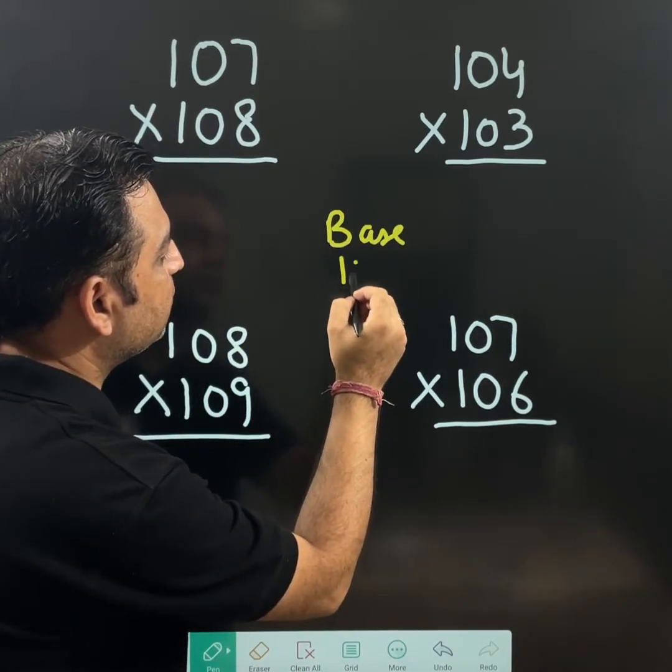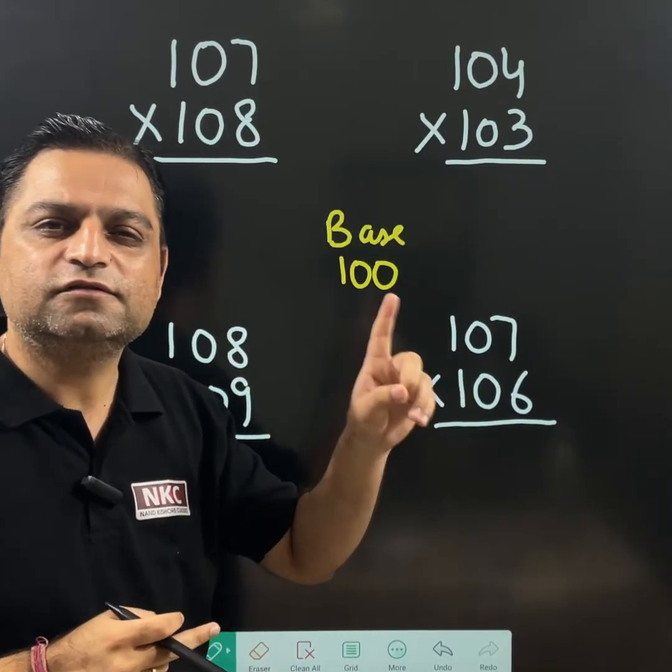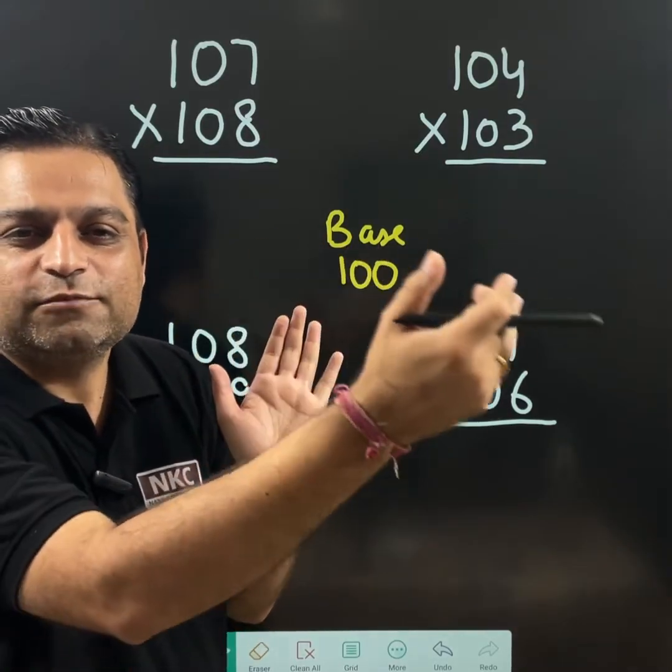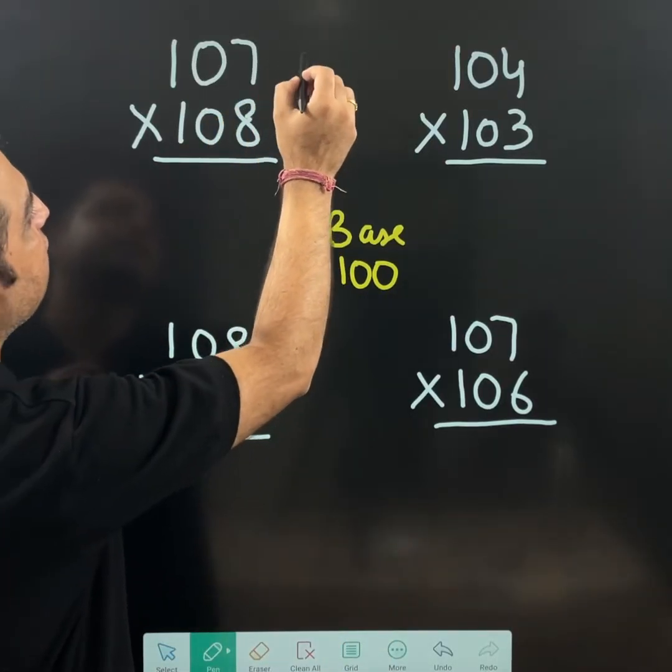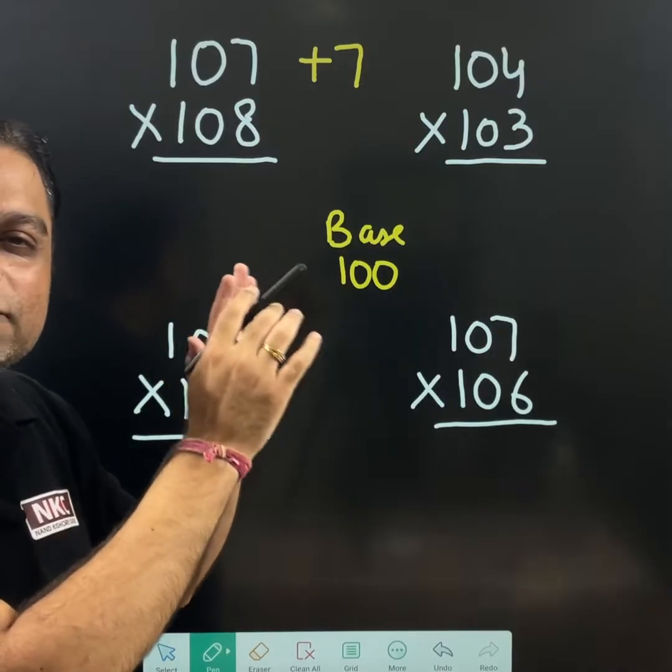Base is 100, which I am going to take. Now, what is the meaning of base 100? All these questions are near to 100 values only. 100 plus something. 100 plus. How much plus? See, 107. If I add 7 to 100, I will get 107.